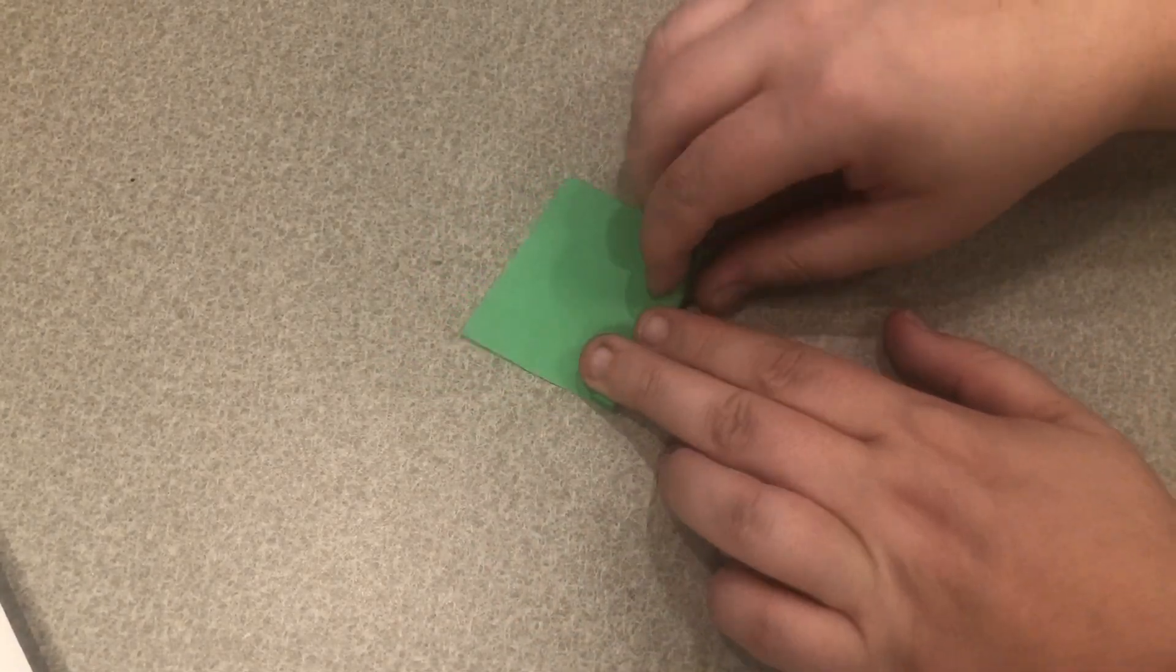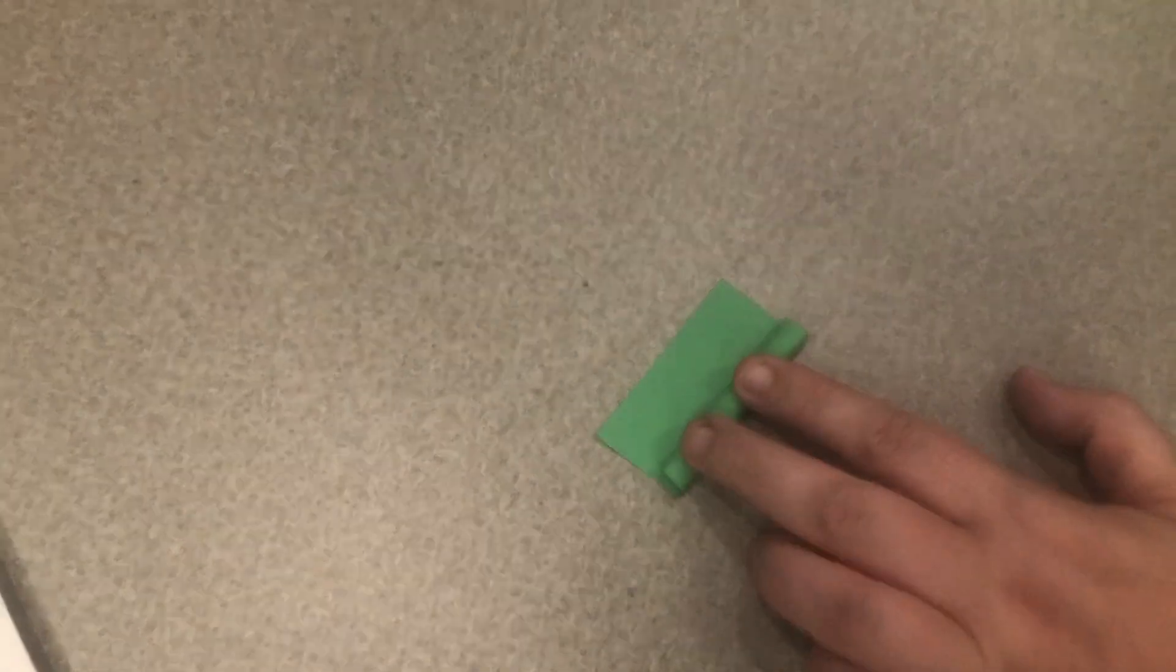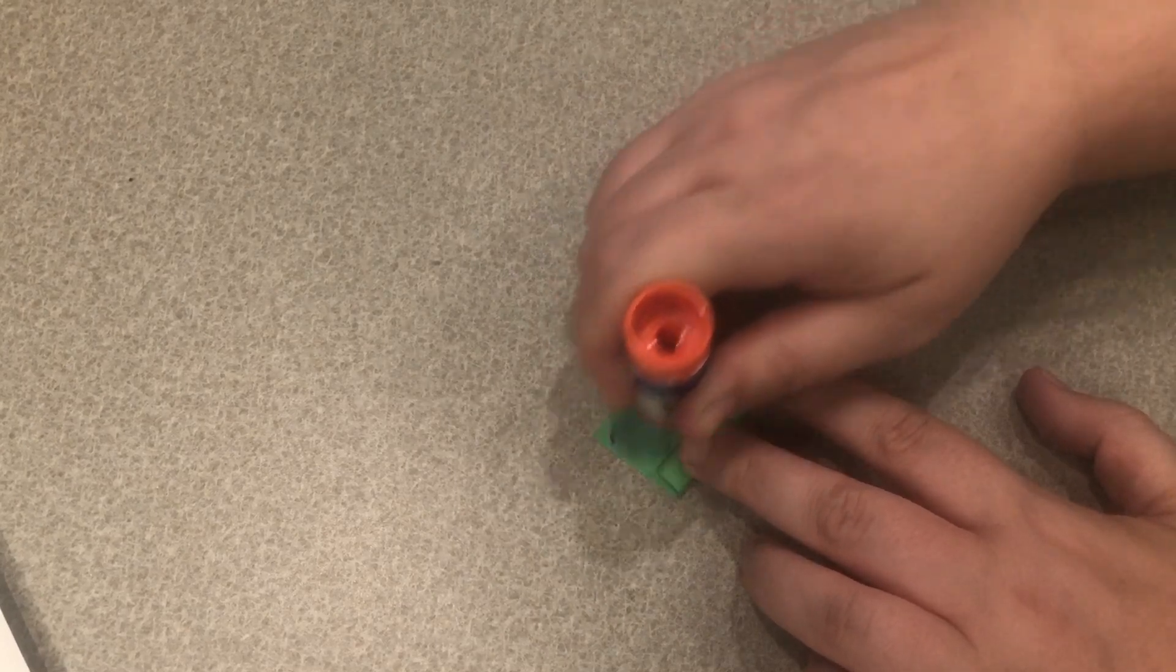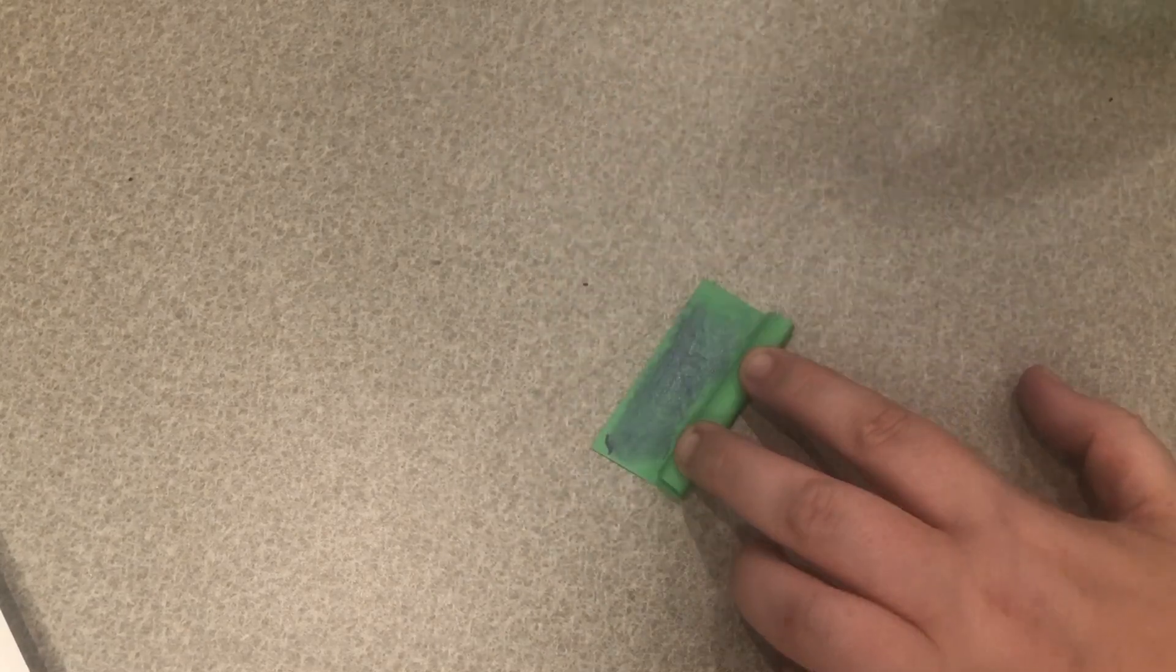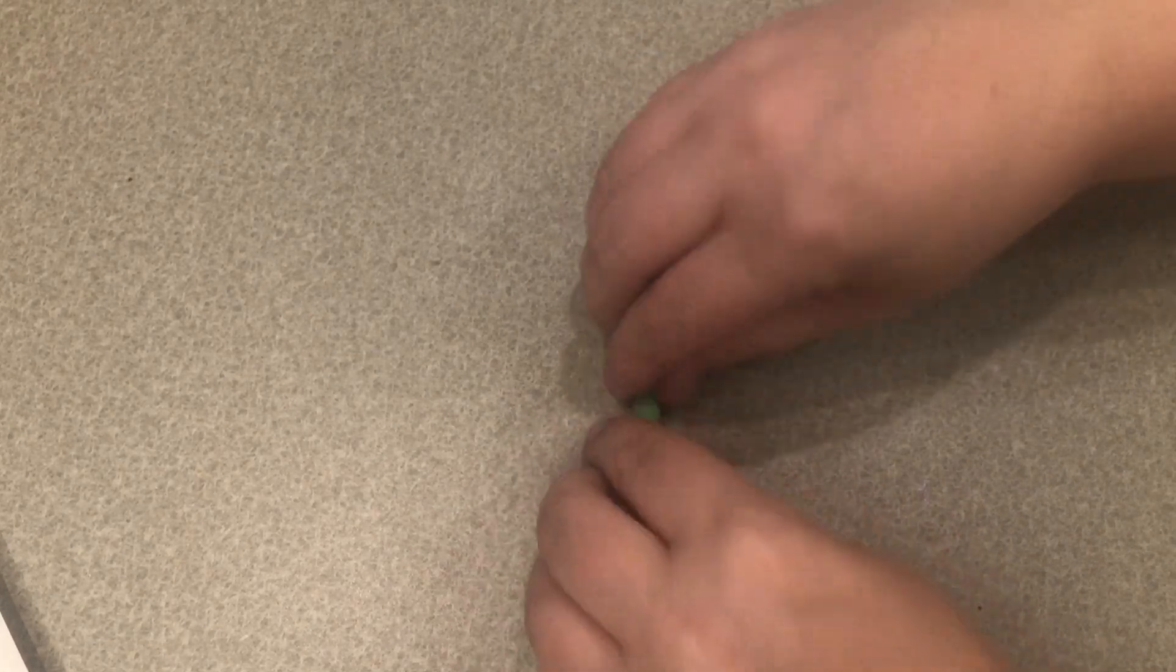And then we're going to glue it shut. So once it gets rolled most of the way we can just put some glue along the edge and then roll it the rest of the way up.